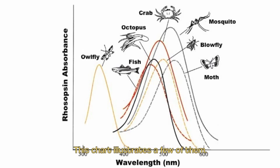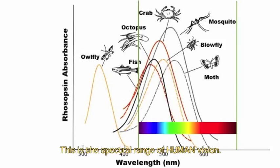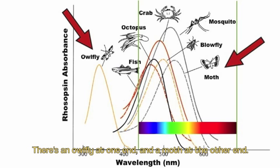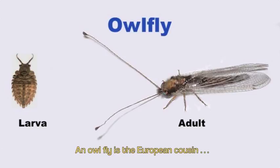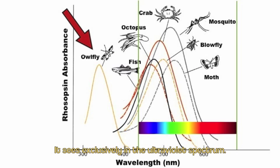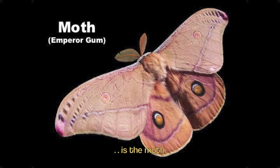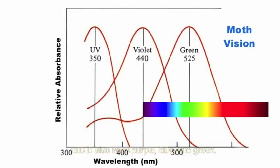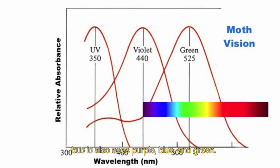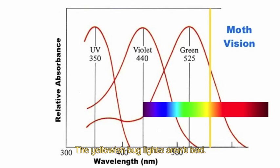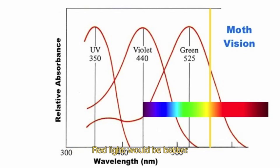This chart illustrates a few of them. There is a spectral range of human vision. There's an elf fly at one end and a moth at the other. The elf fly is the European cousin of the North American antlion, and it sees exclusively in the ultraviolet spectrum. On the other end of the chart is the moth, which can see violet, purple, blue, and green. Just a little note: the yellowish bug lights aren't bad — to a moth, they look like a very dim light. A red light would really be better.